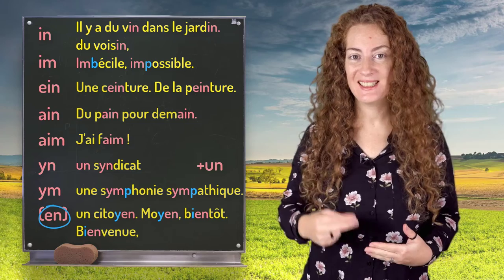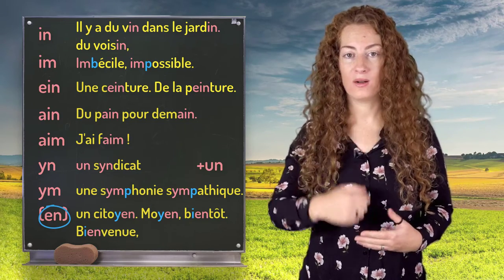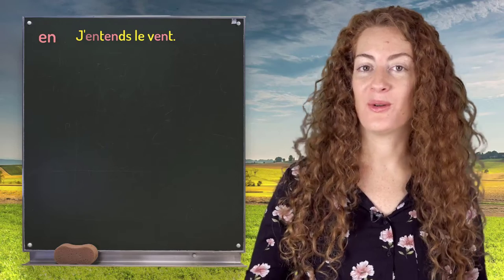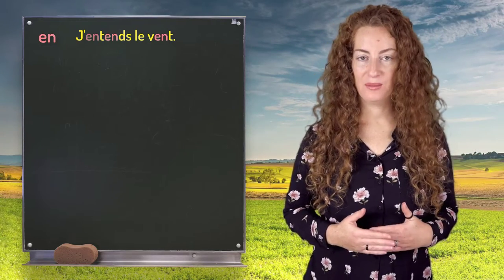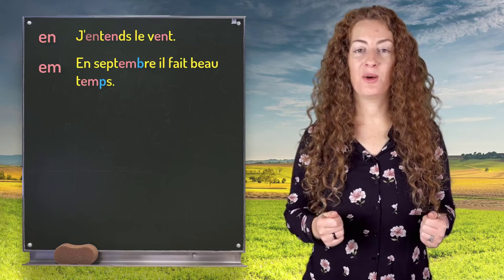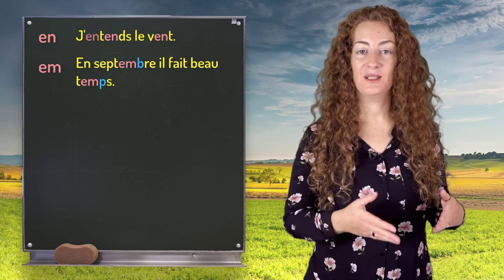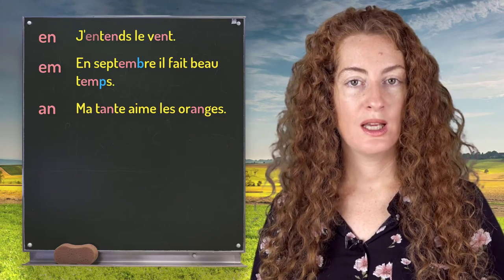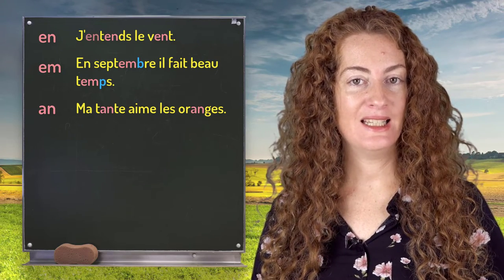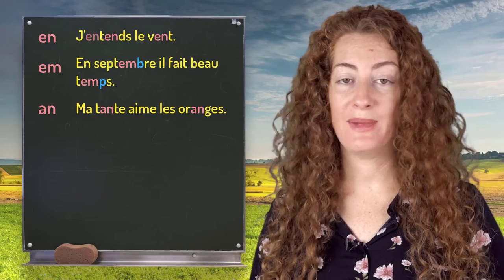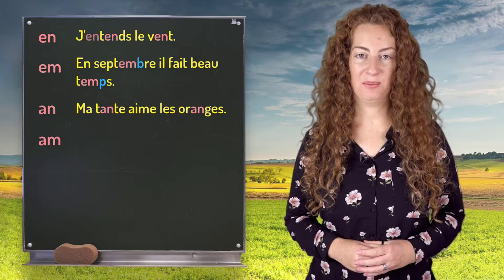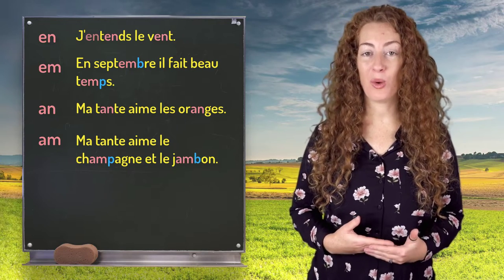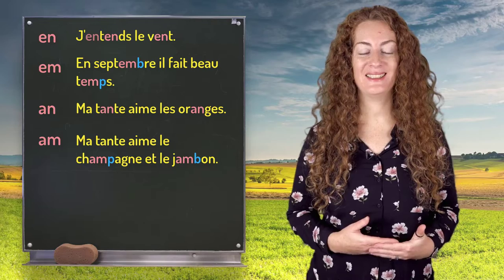AN is the second sound we have studied. EN. For example: j'entends le vent. We can write it E-M before B and P: en septembre, il fait beau temps. AN — we write it A-N: ma tante aime les oranges. A-M before B and P: ma tante aime le champagne et le jambon.